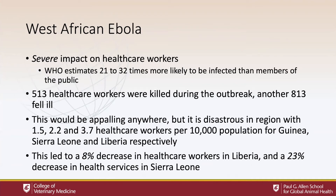Probably the other best example is the West African Ebola outbreak. This had a very severe impact on healthcare workers. The World Health Organization estimated that healthcare workers were somewhere between 21 and 32 times more likely to be infected than members of the public. This killed 513 healthcare workers during the outbreak, and another 813 fell sick. This would be appalling anywhere, but it's disastrous in West Africa, where you have 1.5, 2.2, and 3.7 healthcare workers per 10,000 people for Guinea, Sierra Leone, and Liberia respectively — countries that cannot absorb massive shocks to their healthcare infrastructure.